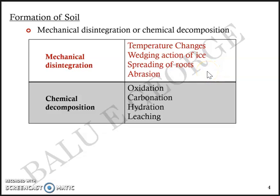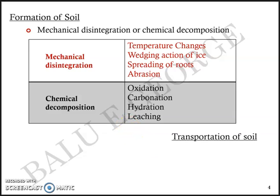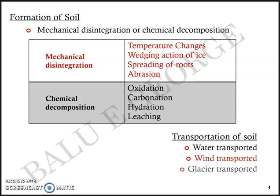In chemical decomposition — which may be due to oxidation, carbonation, hydration, or leaching — the resulting soil particles have a considerable change in chemical composition compared to the parent rock. The transportation of soil can be due to different agents: water-transported soil, wind-transported soil, glacier-transported soil, or gravity-transported soil.